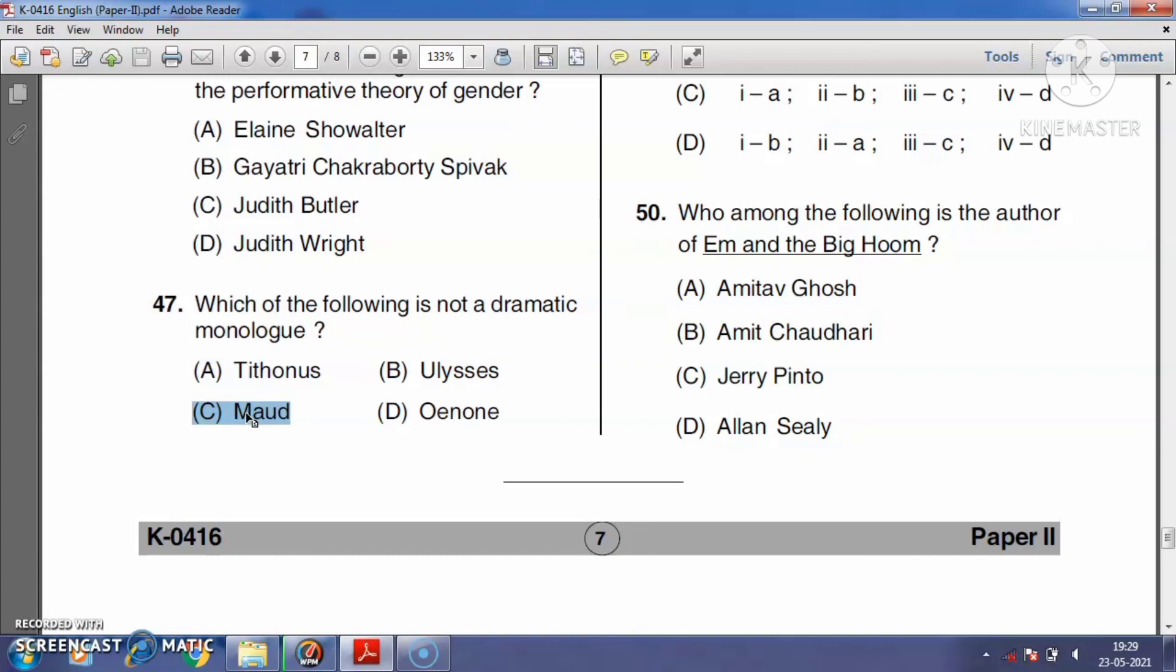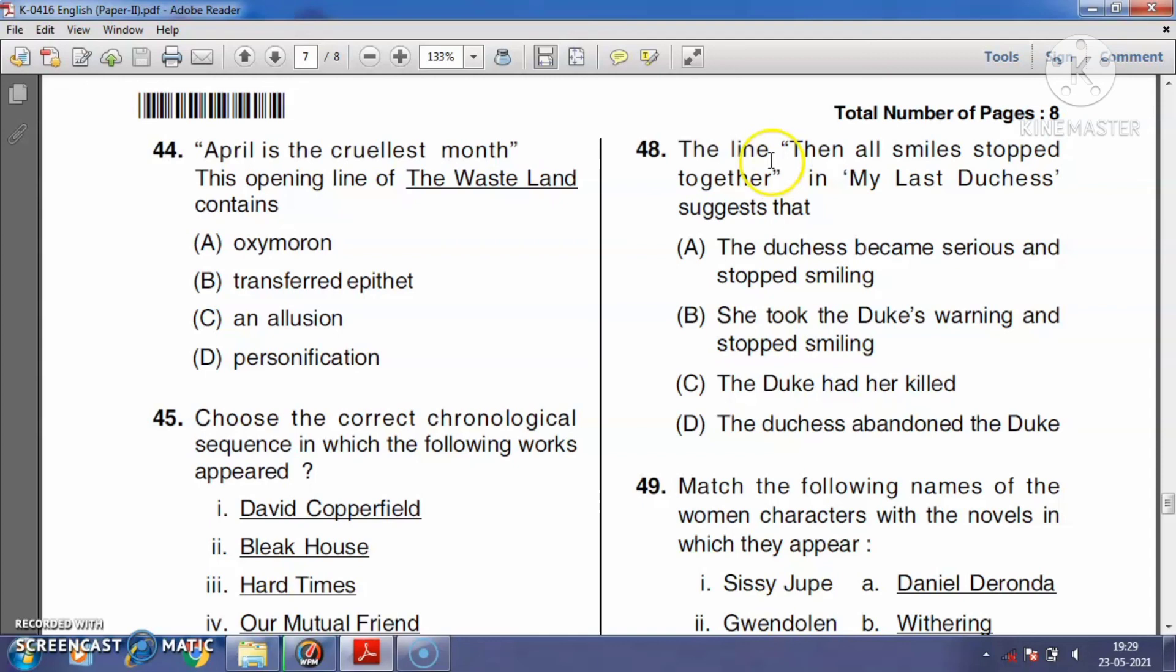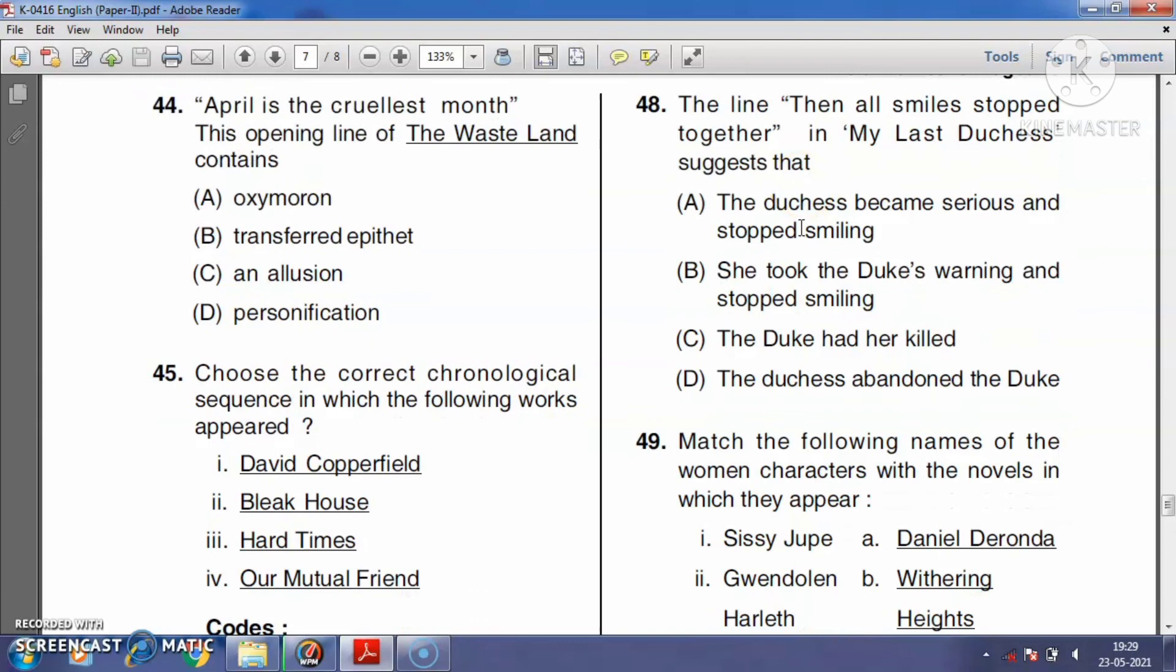Question number forty-eight: The line 'Then all smiles stopped together' in 'My Last Duchess' suggests that the duchess became serious and stopped smiling, she took the Duke's warning, the Duke had her killed, or the duchess abandoned the Duke? The right answer is option C, the Duke had her killed. 'My Last Duchess' is a poem by Robert Browning, published in 1842.